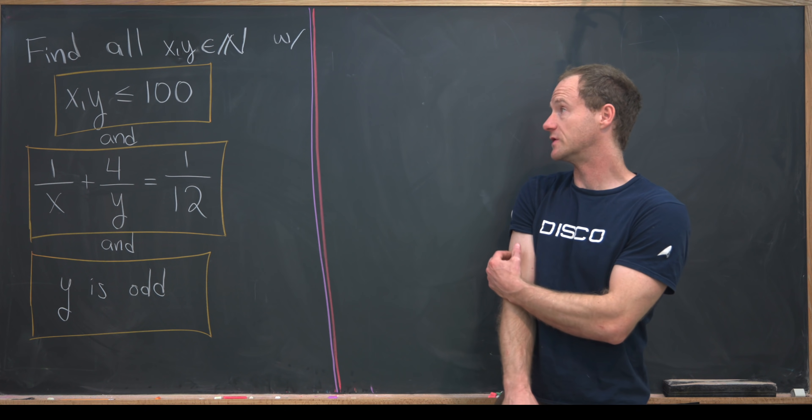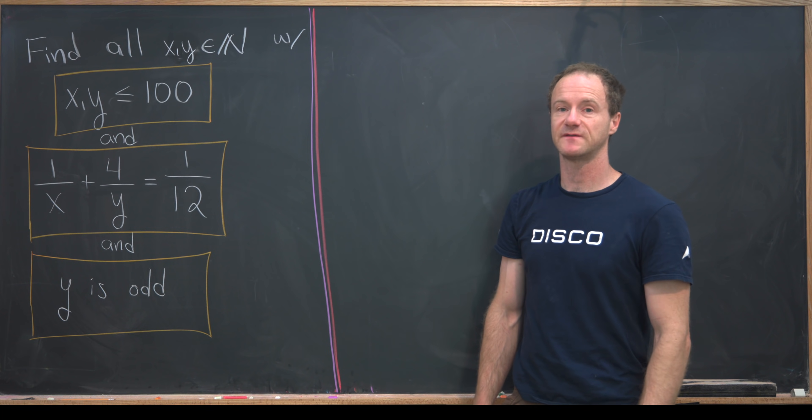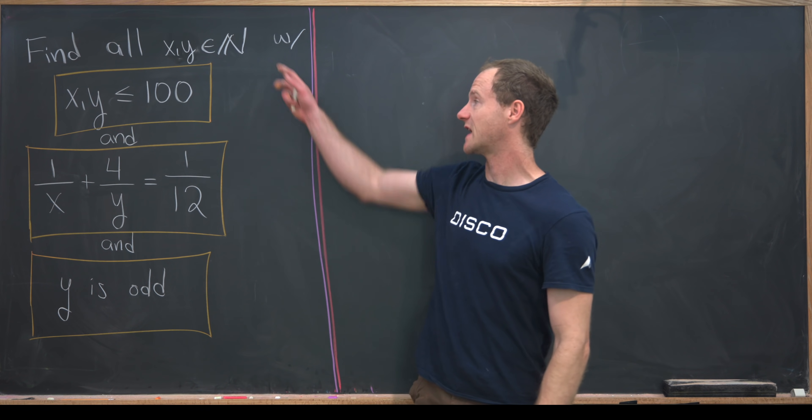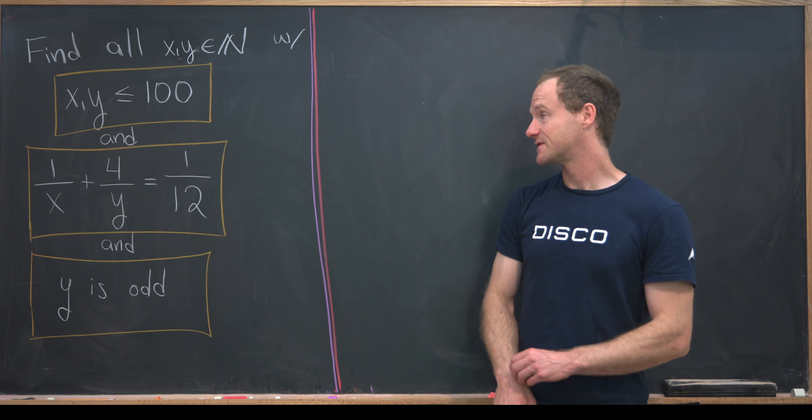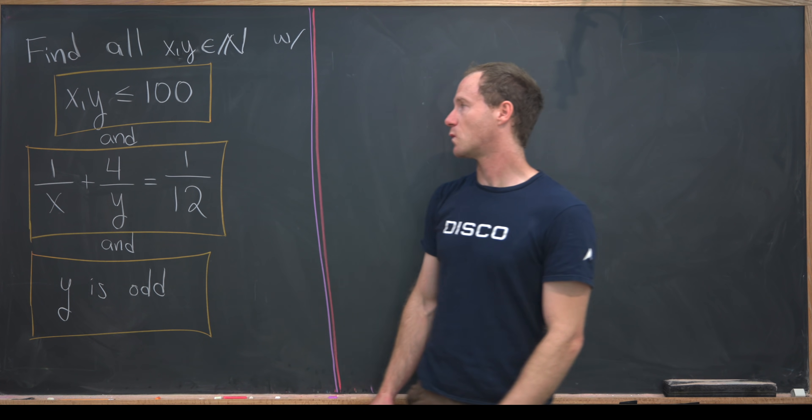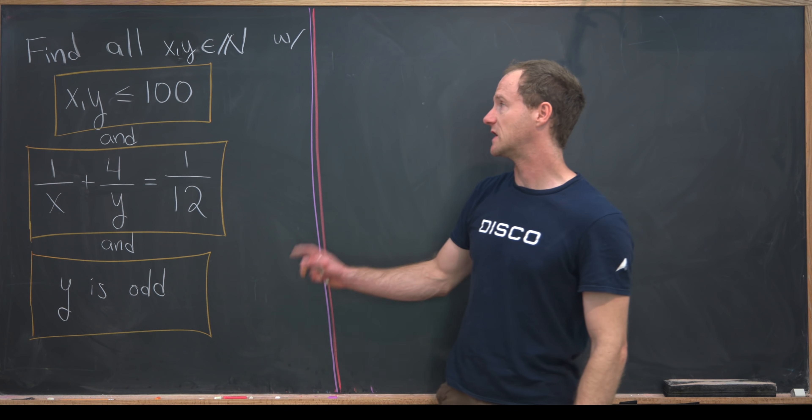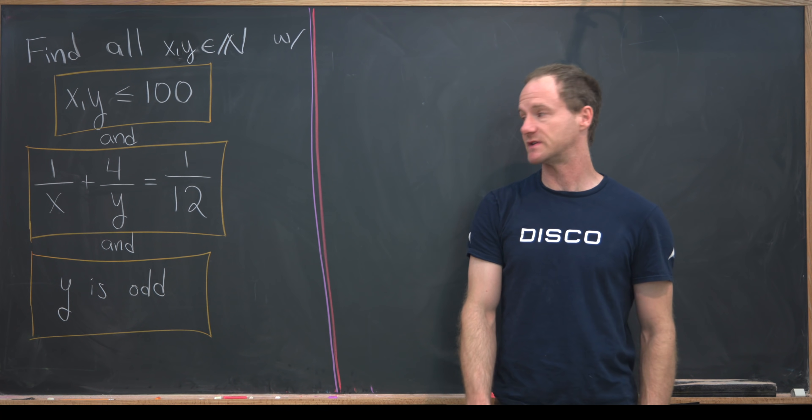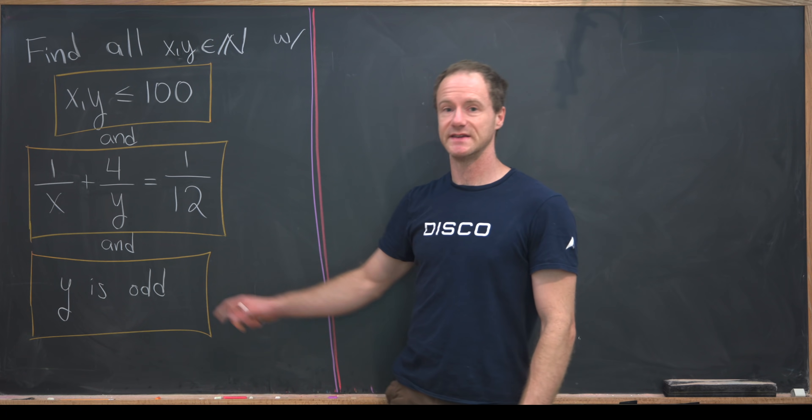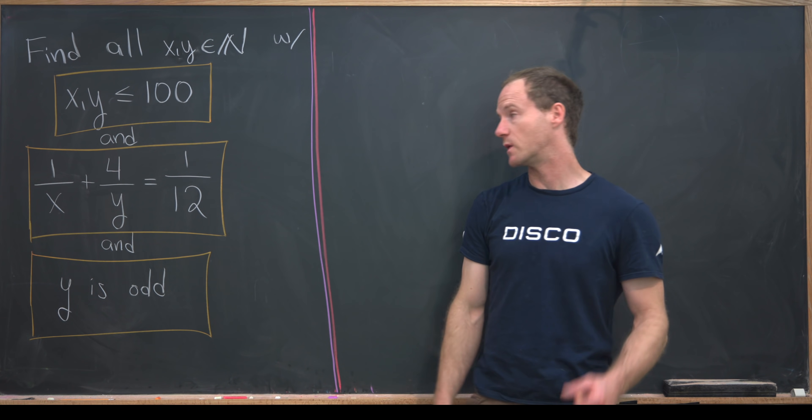I've got a nice number puzzle to show you guys today. Our goal is to find all positive integers x and y satisfying three conditions. We've got x and y are less than 100, so they're between 1 and 100 given that we're assuming they're positive integers. y is odd, and they also satisfy this rational equation: 1 over x plus 4 over y equals 1 over 12.